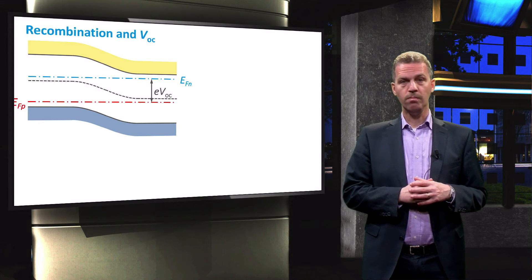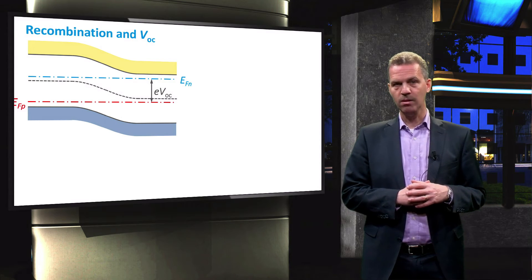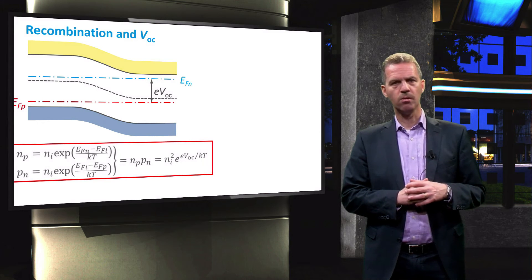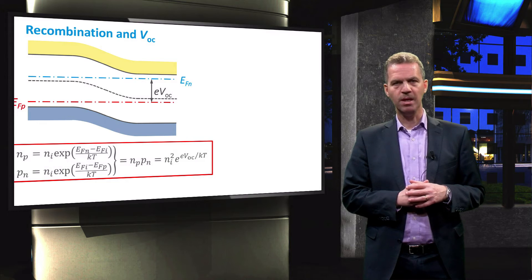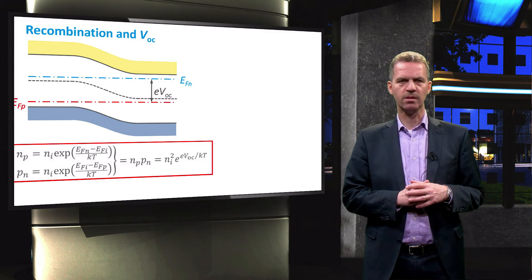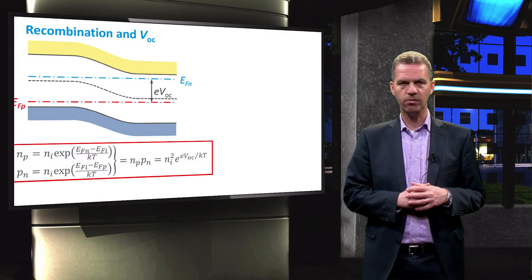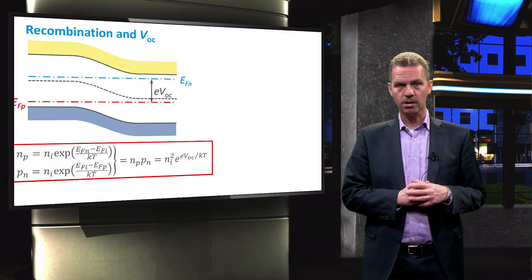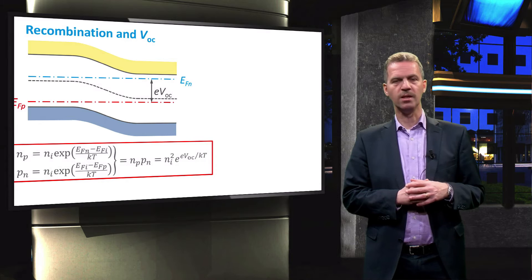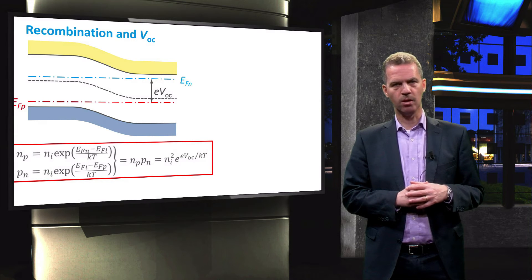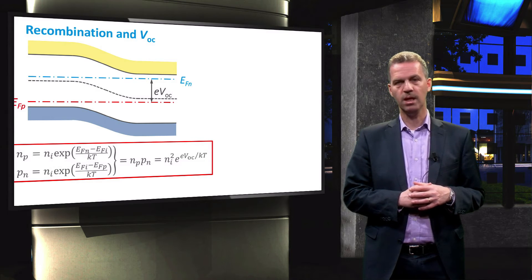Now we return to the band diagram and examine the VOC in a different way. This time we work out the minority carrier densities in the P and N type region and express these using the energy differences between the quasi-Fermi levels and the intrinsic Fermi level. We then find that the product of the minority carrier concentration in each region is equal to the intrinsic carrier concentration squared times an exponential factor containing the VOC.